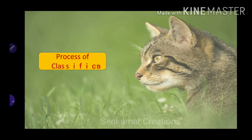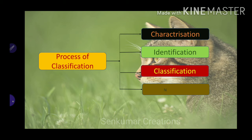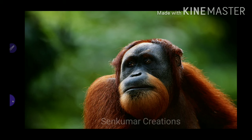The process of classification can be classified into four different groups: characterization, identification of an organism, classifying the organism, and then naming the organism — that is nomenclature.